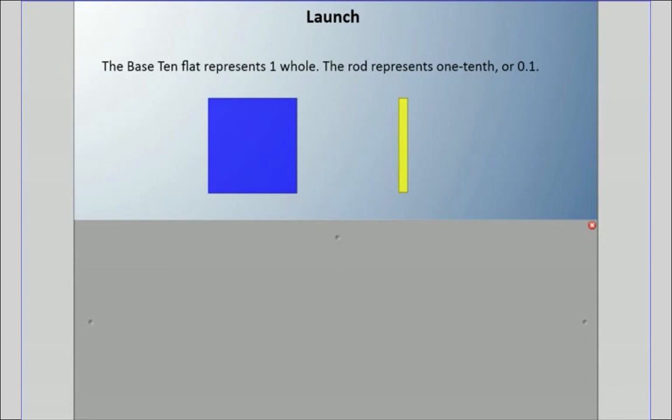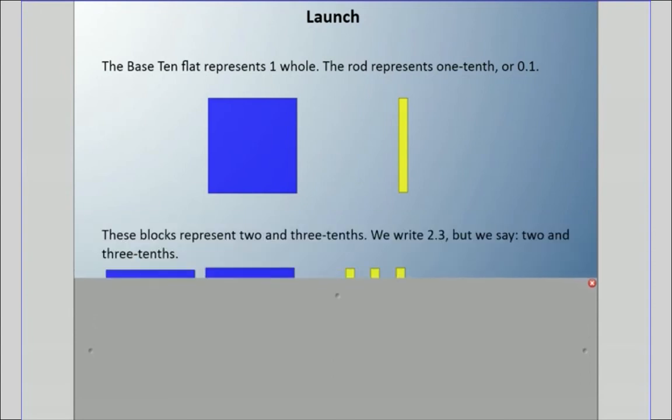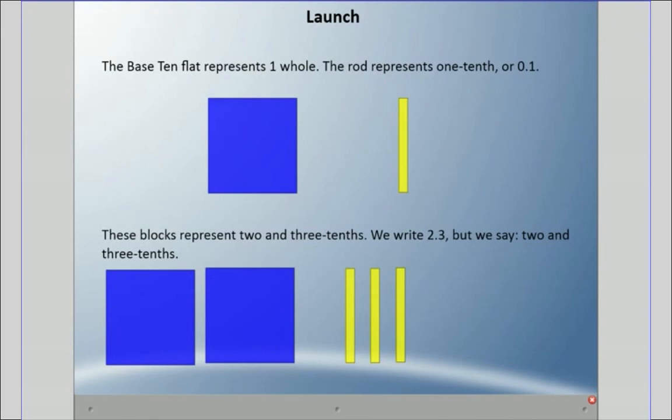Today's lesson is on adding decimals. To start, we'll start with tenths and then move into hundredths. I have a base 10 flat here representing one whole, and the rod on the right represents one tenth. Here I have some blocks representing two and three tenths, and we write 2.3 but technically say two and three tenths.